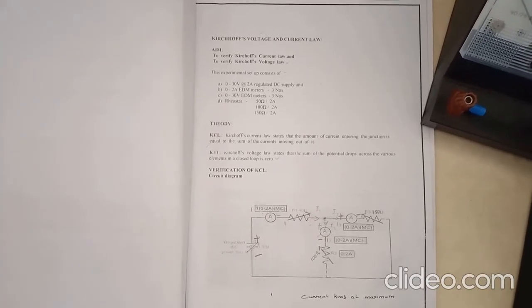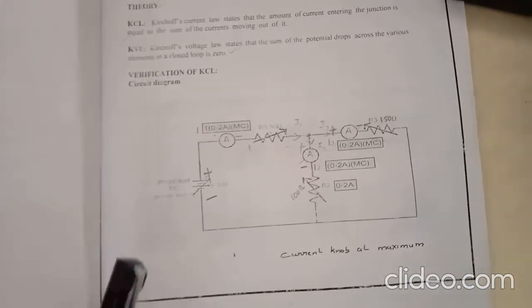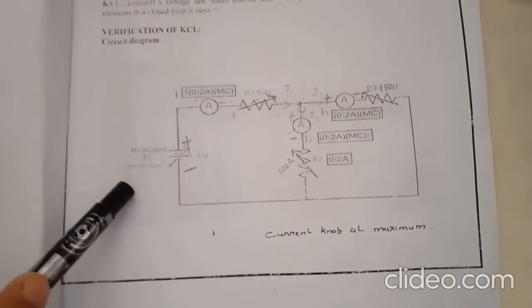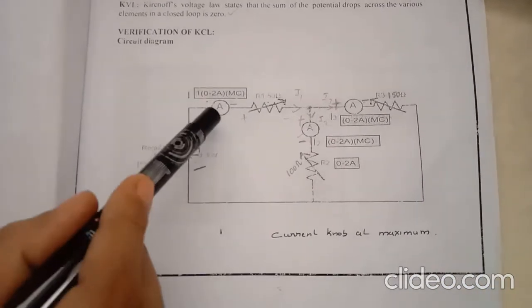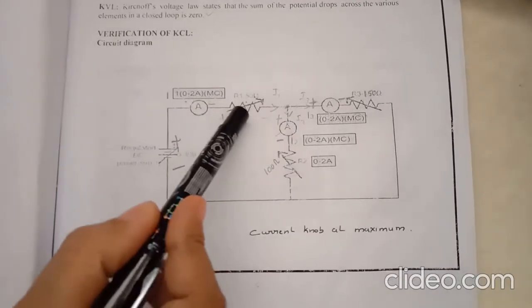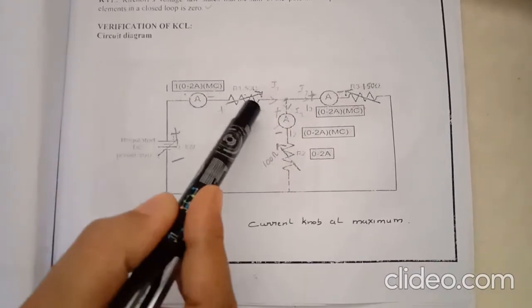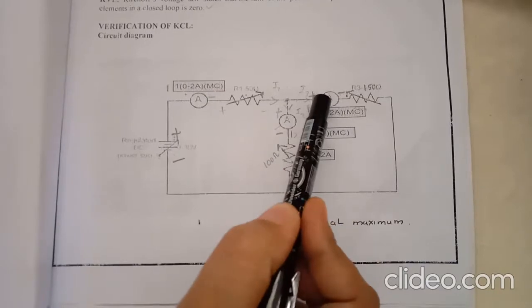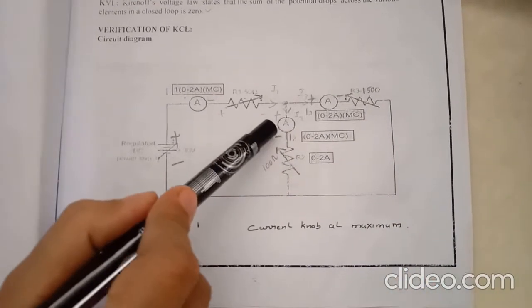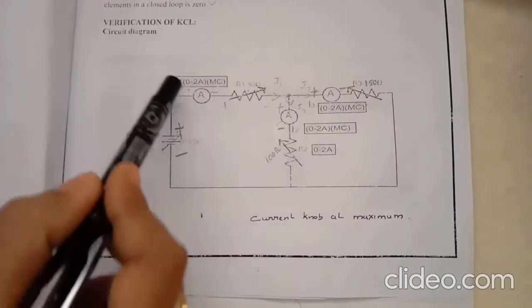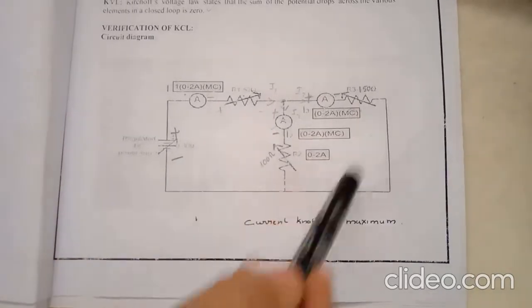Connections for this are made as shown in this figure. You can see here this is the regulated power supply, and this is the ammeter, and this is the rheostat. This is ammeter 1, rheostat 1, ammeter 2, rheostat 2, ammeter 3, rheostat 3. All these are connected in series.